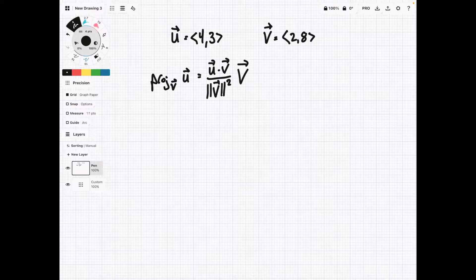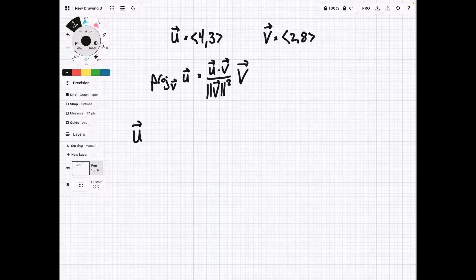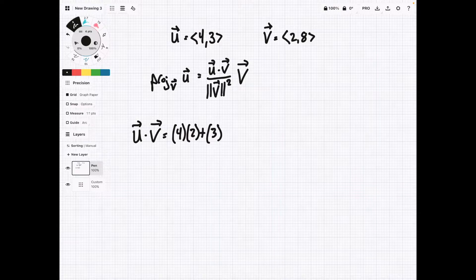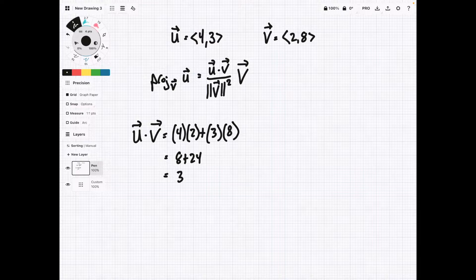And so we're going to use the formula u dot v over the magnitude of v squared times v. So first off, we're going to find this dot product. So we're going to do u dot v. And this is going to equal the x components multiplied, so 4 times 2, plus the y components multiplied, 3 times 8. This is going to be 8 plus 24, and that is 32. So we have our dot product.